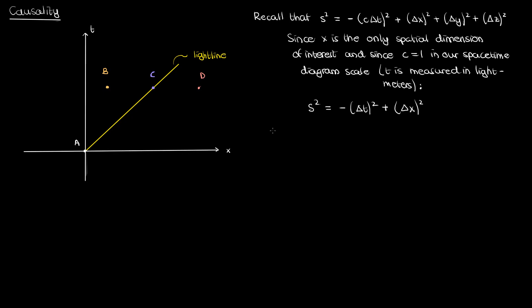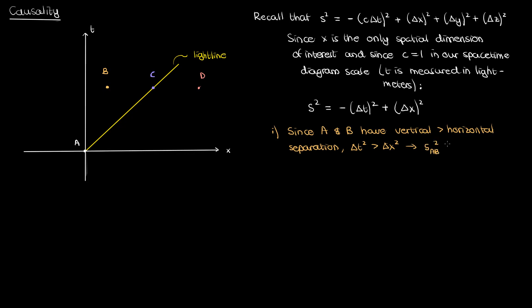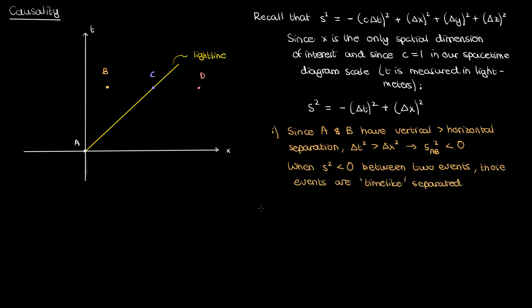Now recall that with one spatial dimension and c = 1 in these units, the spacetime interval simply becomes negative delta t squared plus delta x squared. Looking at events A and B: the vertical (time) separation is greater than the horizontal (distance) separation, so delta t squared is greater than delta x squared. This means the spacetime interval between A and B is negative — the delta t term dominates. When the spacetime interval is negative, those events are said to be time-like separated, and A and B are time-like separated events.